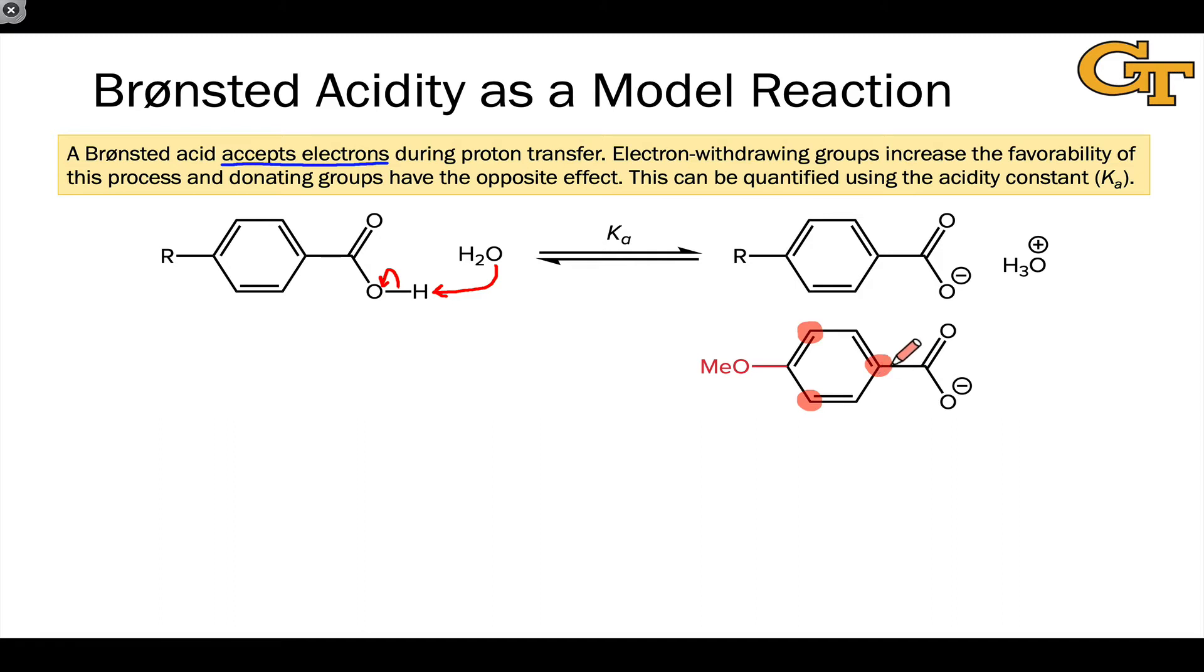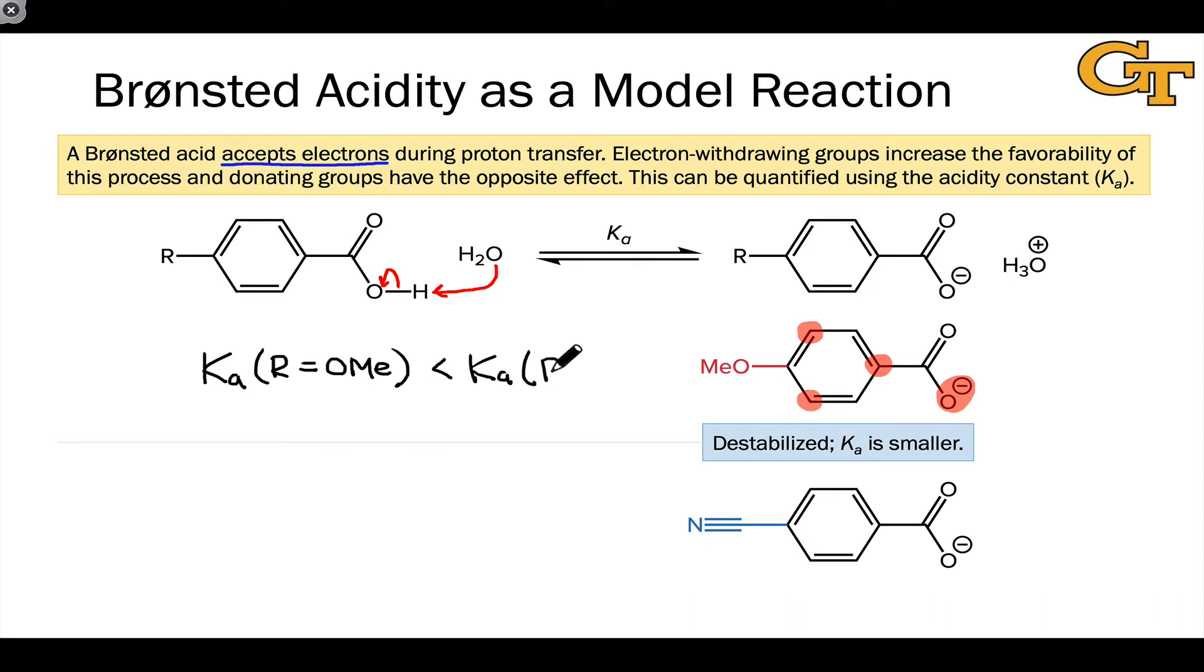And we previously noted that the electron density here and the electron density in the carboxylate group are sort of in conflict. There's electron-electron repulsion there. That's going to suggest that this substrate with the electron donating group is destabilized relative to, say, benzoic acid where R is just H. Because the conjugate base is destabilized, what this means is that Ka for the benzoic acid where the R group is equal to methoxy will be smaller than Ka for the substrate in which the R group is simply hydrogen.